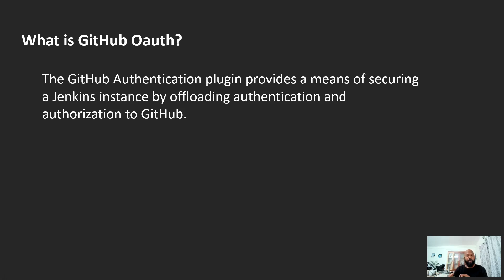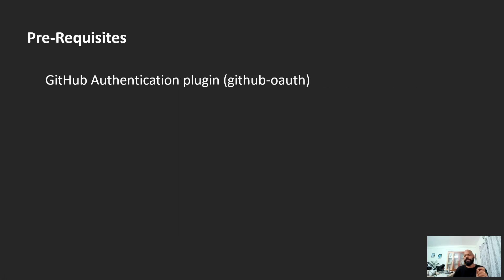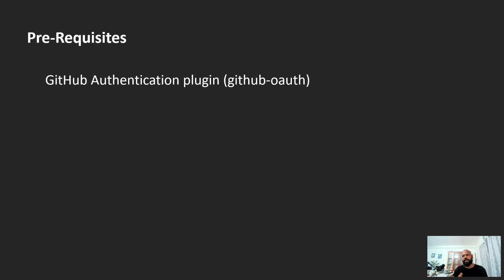The only prerequisite is your Jenkins installation — I believe you will have Jenkins installed already and have access to it. After that, you need the GitHub Authentication plugin installed in your Jenkins. Let me show you how we can do the setup and access Jenkins using GitHub credentials.